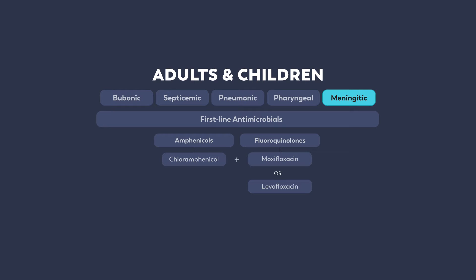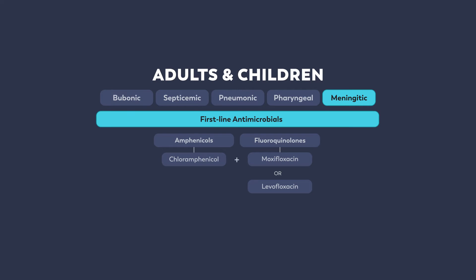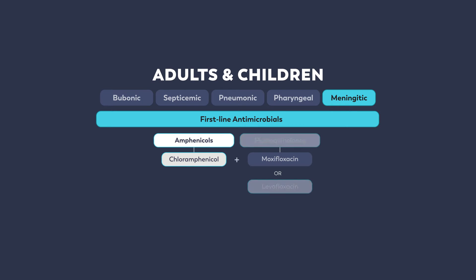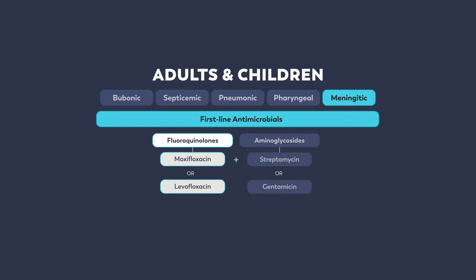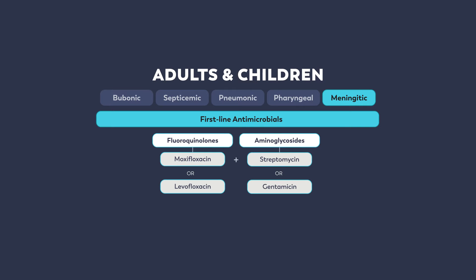Plague meningitis has some specific treatment considerations. If plague meningitis is suspected, the first-line therapy for both adults and children is chloramphenicol, plus either levofloxacin or moxifloxacin. Although chloramphenicol has a long history of successful use in plague meningitis, it is not readily available in the United States. If chloramphenicol is not available, a suggested alternative is a first-line fluoroquinolone plus streptomycin or gentamicin.